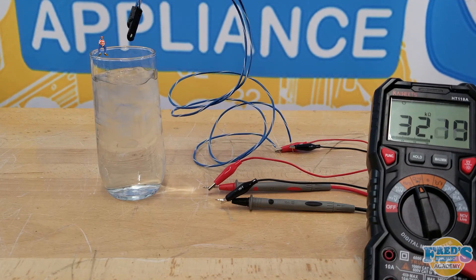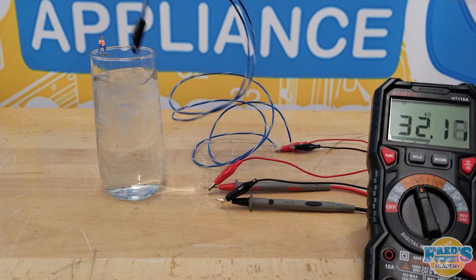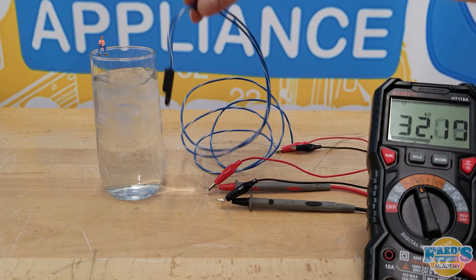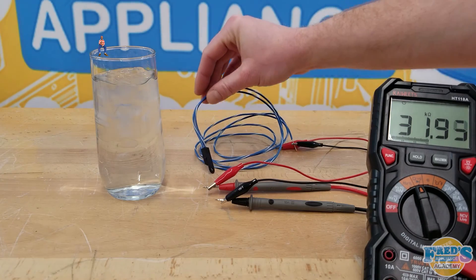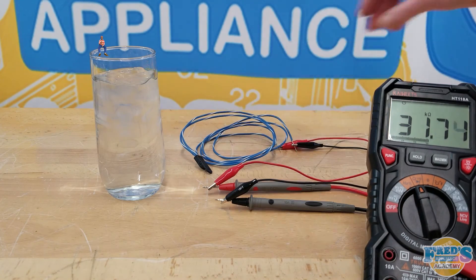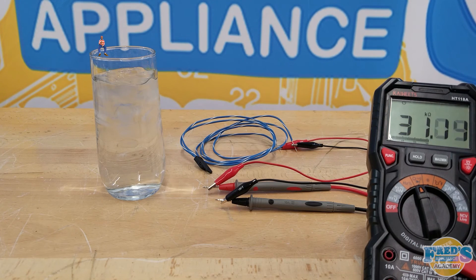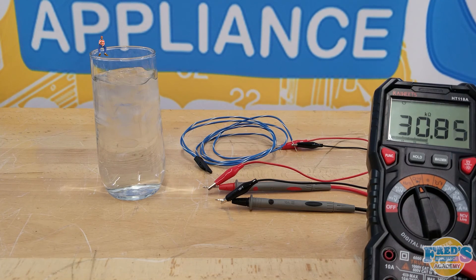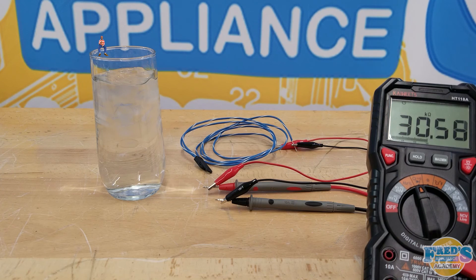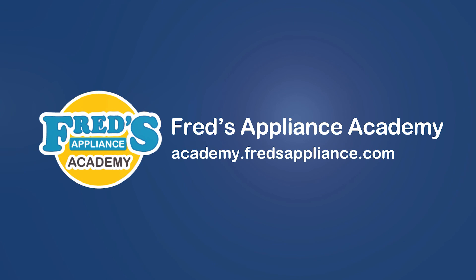Once the thermistor is removed from the water its resistance value should immediately start to decrease. If left out long enough the thermistor should reach room temperature and its resistance value should correlate. This test proves that the thermistor is able to accurately read decreasing temperatures as well as increasing temperatures.